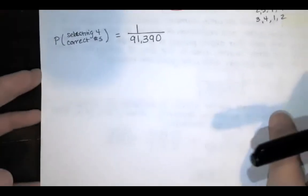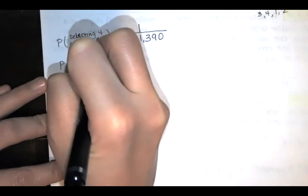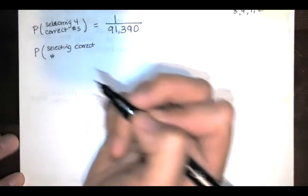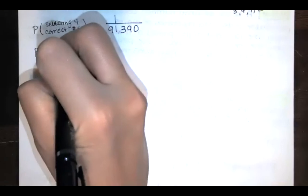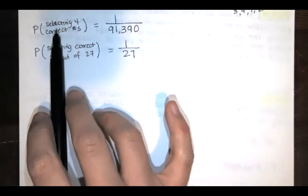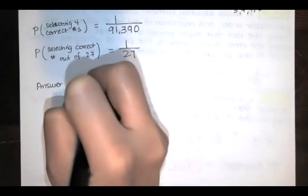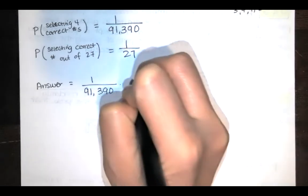If there are 27 numbers and there's one of them that's correct, you have a 1 in 27 chance of choosing correctly. So we want to multiply by the probability of selecting the correct number out of 27, and we've got 1 in 27. According to the multiplication rule, all I have to do is multiply those two probabilities together. So the answer that they're looking for is 1 out of 91,390 times 1 out of 27.